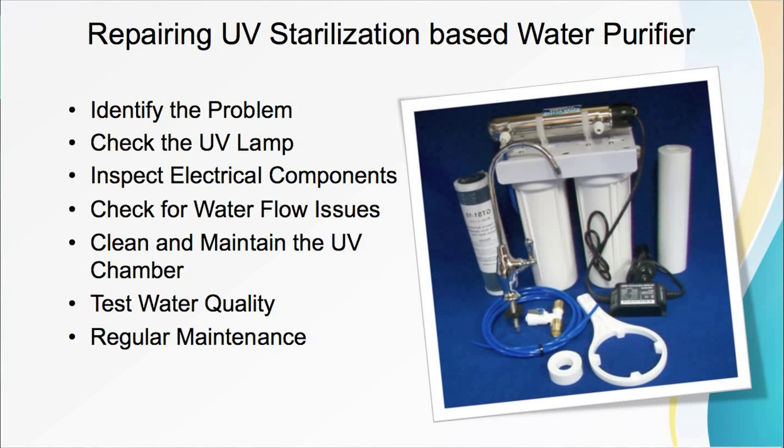Then step 3 is inspect electrical components. If the UV lamp still does not work after replacement, or if you suspect an electrical issue, follow these steps: check the power supply cable and lamp plug for any damage or loose connections. Use a multimeter to test the power supply and confirm that electricity is reaching the UV lamp. If there is no power, check your fuses or circuit breakers. Ensure that the UV lamp is properly connected to the control unit and all wires and connections are secure.